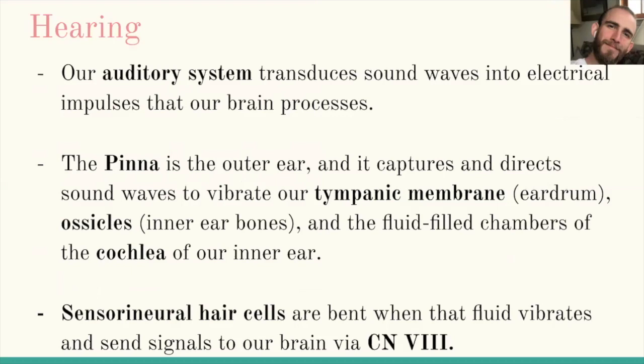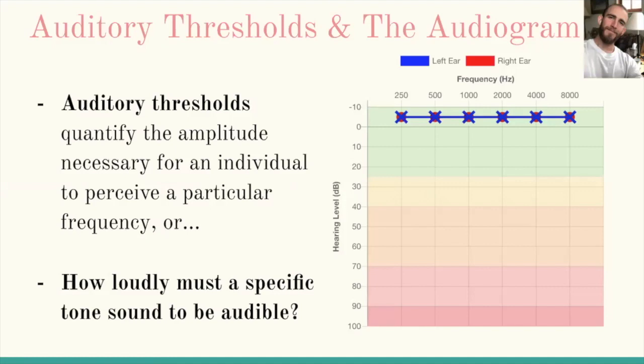The audible spectrum represents the frequencies humans can detect. For any given frequency, an individual requires a certain amplitude to be able to detect that tone. That minimum audible volume is an auditory threshold. Pure tone thresholds are the gold standard for testing hearing, and they represent the volume necessary for an individual to detect a specific pure tone. The higher the auditory threshold, the worse an individual's hearing for that frequency.